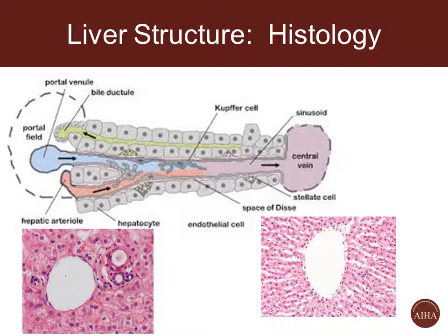Here's a quick picture of what these structures actually look like under a microscope. On the left you can see what the portal vein and hepatic artery actually look like. On the right, the big hollow structure in the middle is the central vein, and you'll see a couple of white structures leading up to those — that's what the actual sinusoids look like under a microscope.